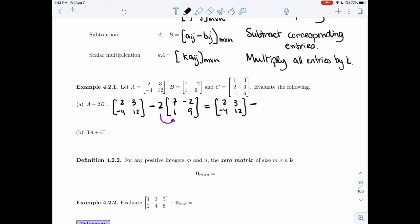I'm going to multiply all entries by 2. So instead of 7, I'm going to get 14. Instead of 2, I'm going to get minus 4. Instead of 1, it's 2, and then 18.